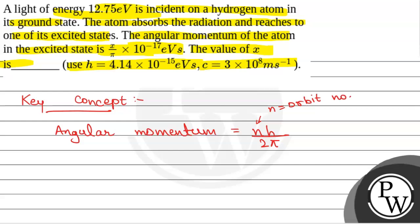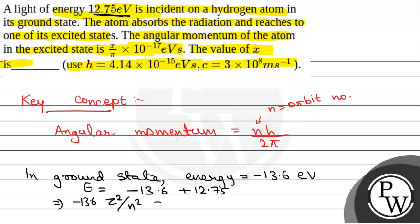Now, we will see in the ground state, energy of the electron is -13.6 electron volts. So after absorbing 12.75 electron volts of energy, the net energy will be E = -13.6 + 12.75 electron volts, or this can be written as -13.6 z²/n² = -0.85.